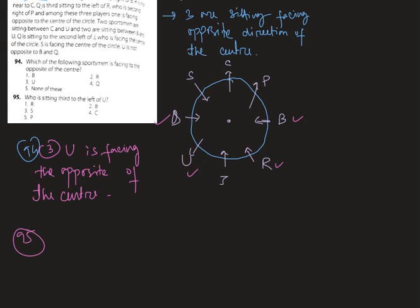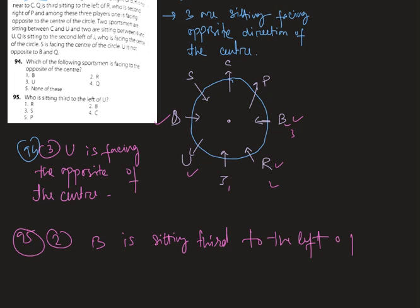Now let's see the next question. Who is sitting third to the left of U? The right answer is B. Counting one, two, three — B is sitting third to the left of U.